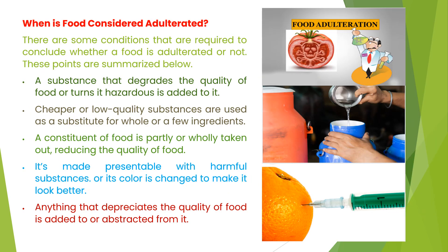So the question is: when is food considered adulterated? There are some conditions required to conclude whether a food is adulterated or not. A substance that degrades the quality of food or turns it hazardous is added to it. Cheaper or low-quality substances are used as a substitute for whole or a few ingredients. A constituent of food is partly or wholly taken out, reducing the quality of food. It's made presentable with harmful substances, or its color is changed to make it look better. Anything that depreciates the quality of food is added to or abstracted from it.